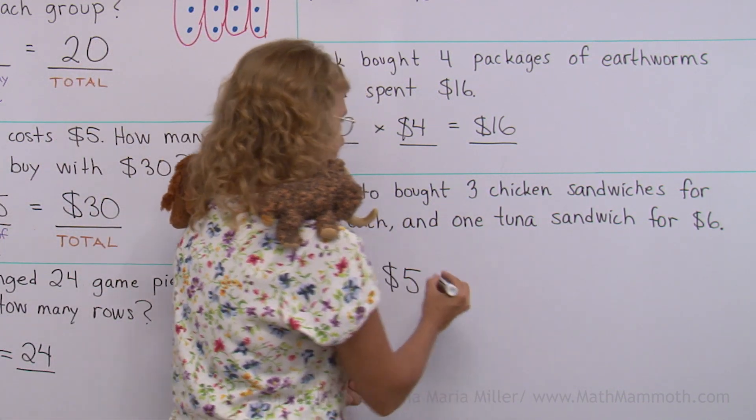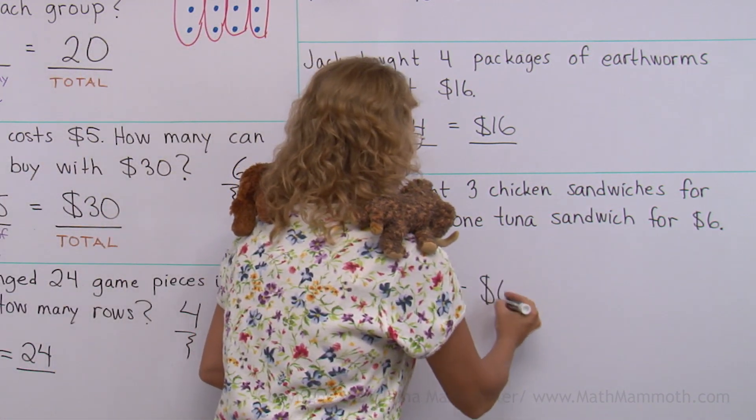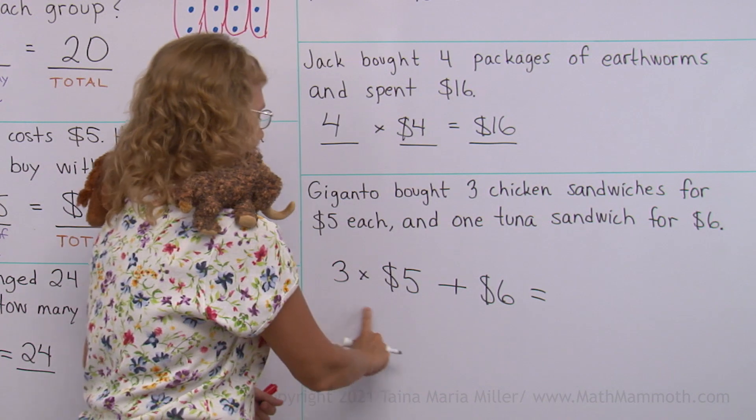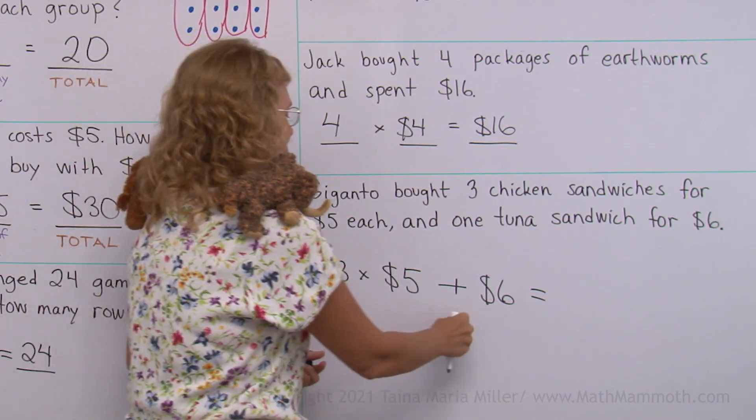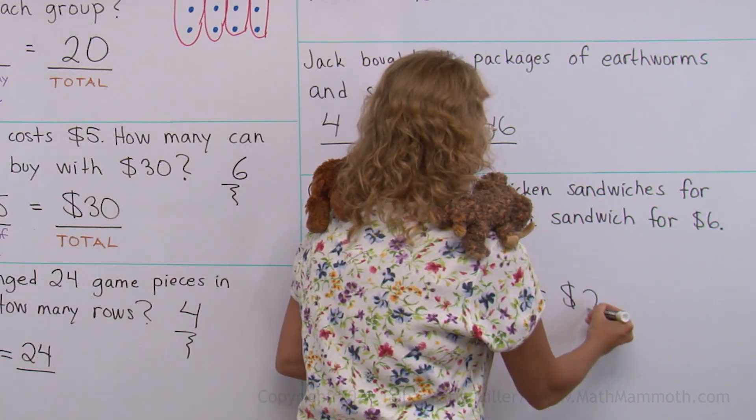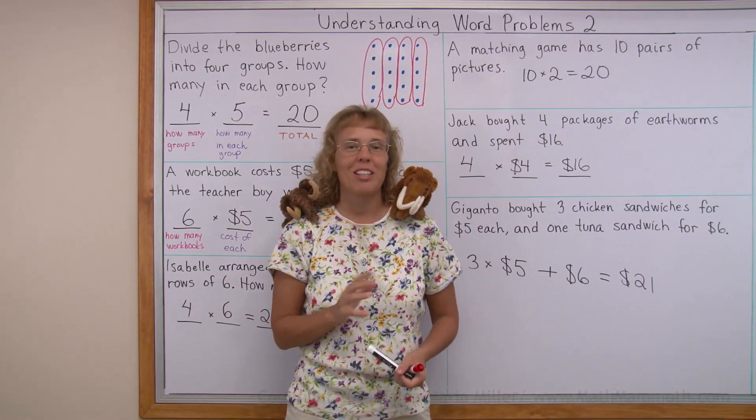So we just add, right? You could do this yourself, right? And then add six dollars. And now we get here. How much Giganto? Ah, 15. 15 plus six. And then we get 21 dollars. That's the cost. So, have a good appetite. We're all done with this lesson.